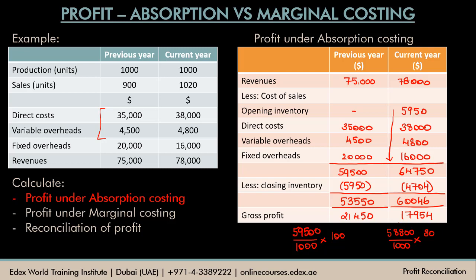One mistake students can make here is while calculating inventory for the current year, using 64,750 instead of 58,800. That's not right because 64,750 includes the value of opening inventory, but we are trying to value closing inventory based on the current year's cost only.